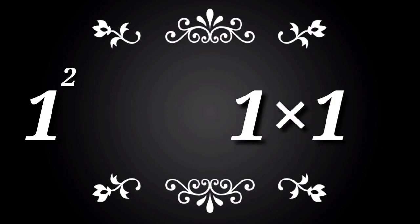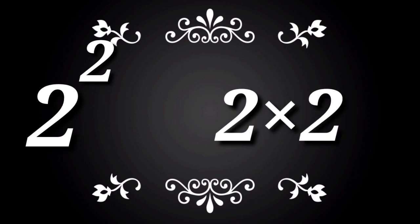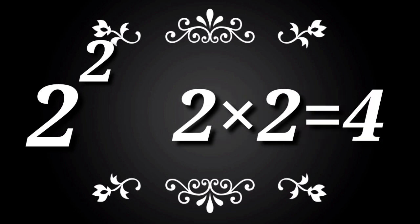1 square. 1 into 1 is equal to 1. 1 1s are 1. 2 square. 2 into 2 is equal to 4. 2 2s are 4.